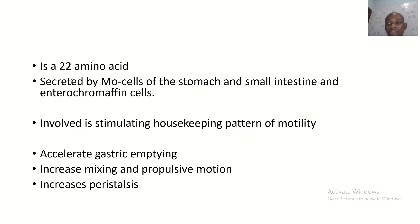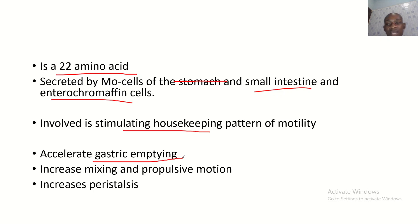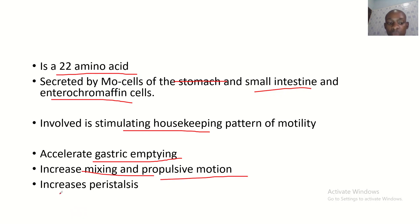Motilin is a 22 amino acid peptide secreted by MO cells of the stomach and small intestine, and enterochromaffin cells. It is involved in stimulating the housekeeping pattern of motility. It accelerates gastric emptying — as the stomach churns, it empties its contents. It also increases mixing and propulsive motion.